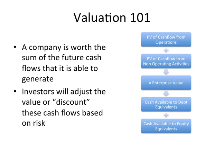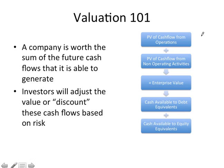To help us with this process, we're going to use a mnemonic for each cash flow. Operating cash flows are ones, non-operating cash flows are twos, debt equivalent cash flows are threes, and equity equivalent cash flows are fours. So one plus two equals three plus four — operating plus non-operating equals enterprise value, which equals debt cash flows plus equity cash flows.